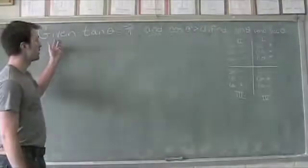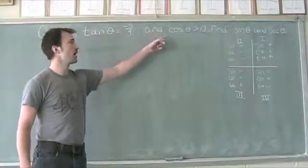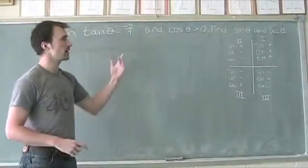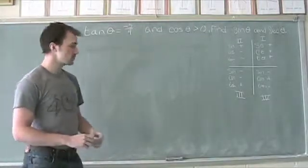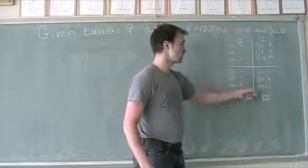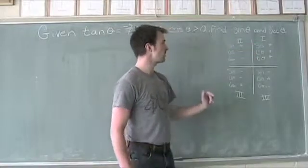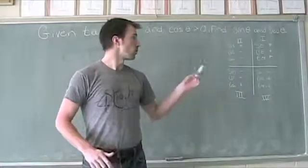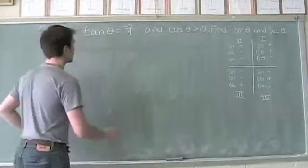Now we're given that tangent of theta equals negative 5 over 4, and cosine of theta is greater than 0. We need to find sine of theta and secant of theta. I've posted our quadrant sign chart from the previous segment, showing the sine, cosine, and tangent signs in each of the four quadrants. Let's use that information along with what we're given to solve.